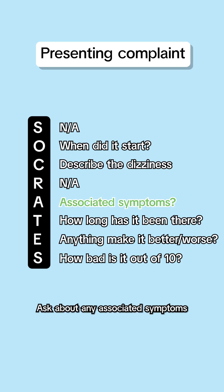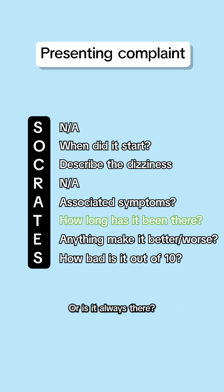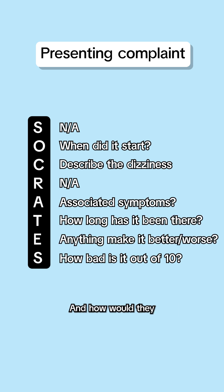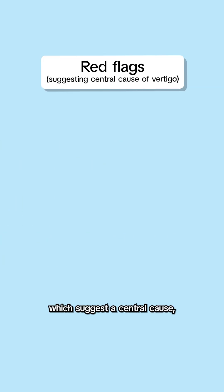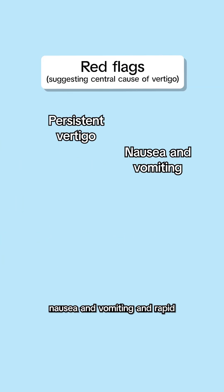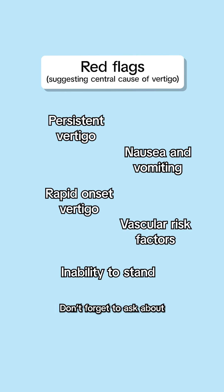Ask about any associated symptoms and whether the dizziness comes and goes or is always there. See if there's anything that makes it better or worse and how they would rate it out of 10. Red flags which suggest a central cause include things like persistent vertigo, nausea and vomiting, and rapid onset vertigo, amongst a few other things.